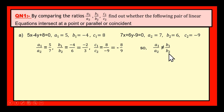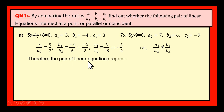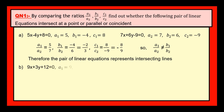A1 by A2 is not equal to B1 by B2. In any pair of linear equations, if A1 by A2 is not equal to B1 by B2, then the lines are intersecting lines. Therefore, the pair of linear equations represents intersecting lines. Now let us solve bit (b).